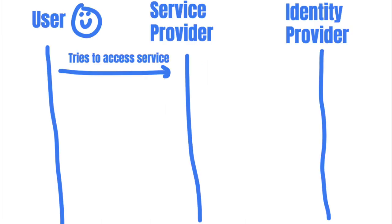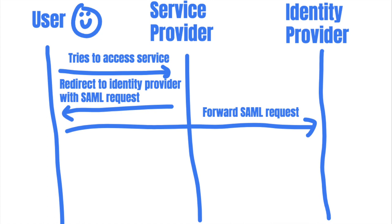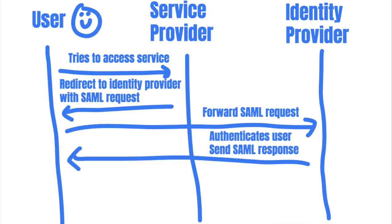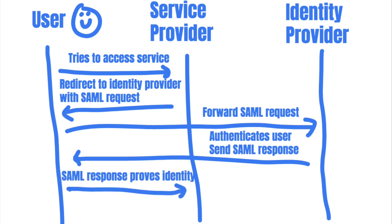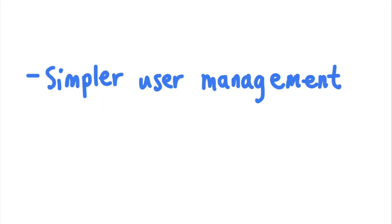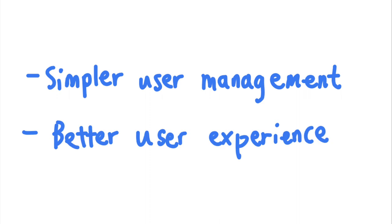When the user is trying to access a service, the service redirects the user to the identity provider. The identity provider authenticates the user and sends back a SAML response that can be used to prove the user's identity at the service provider. Finally, the user can send the SAML response to the service provider to access its services. This system allows companies with multiple web services to only manage a centralized source of user credentials, instead of keeping track of users for each site. It also eliminates the need for users to log in multiple times.